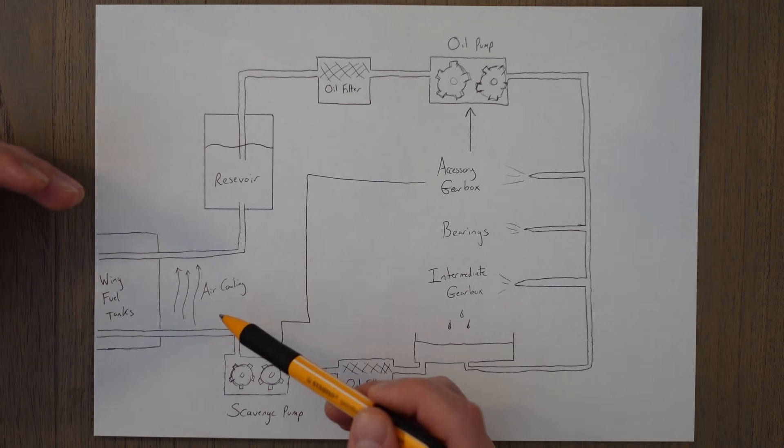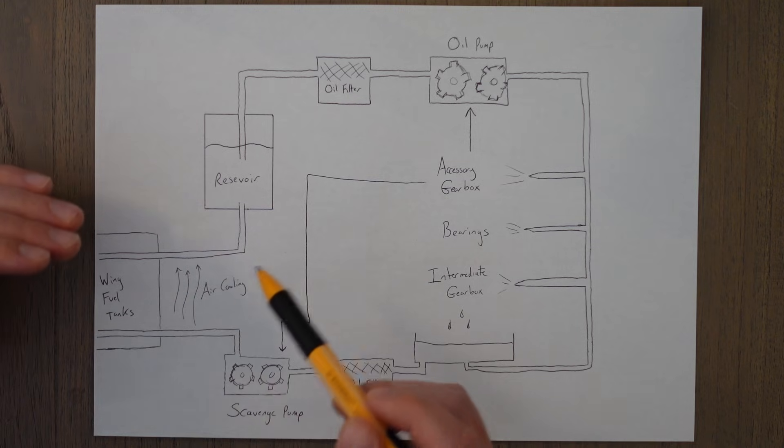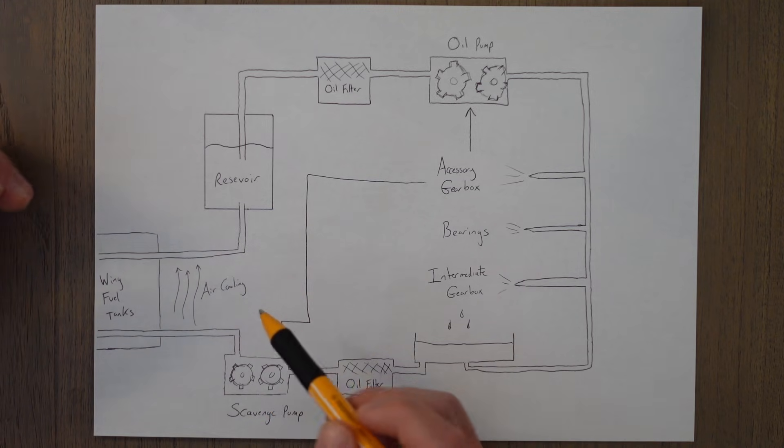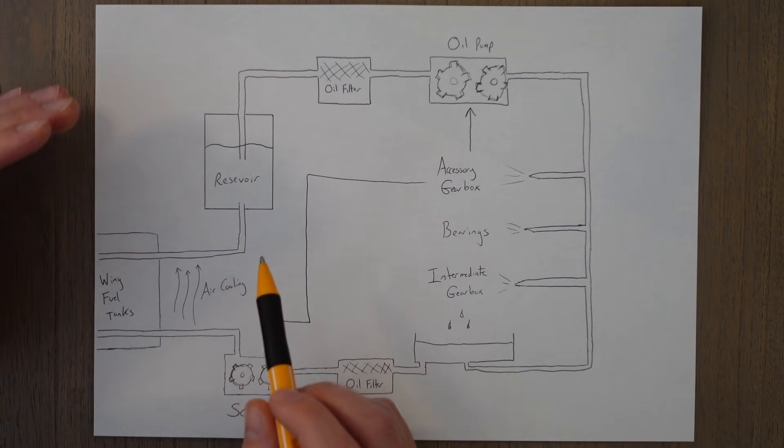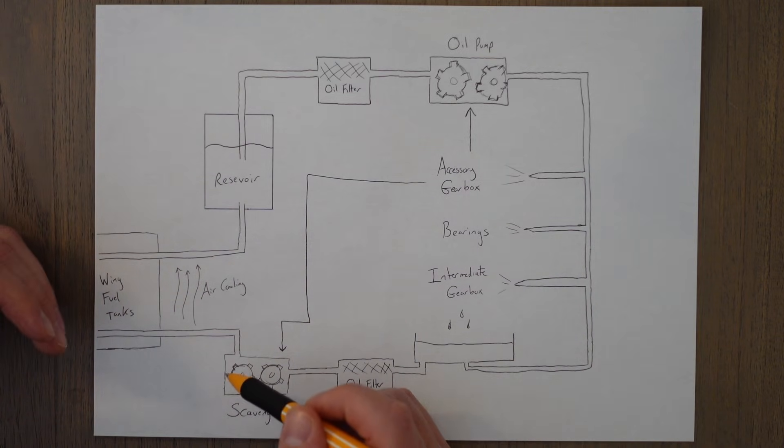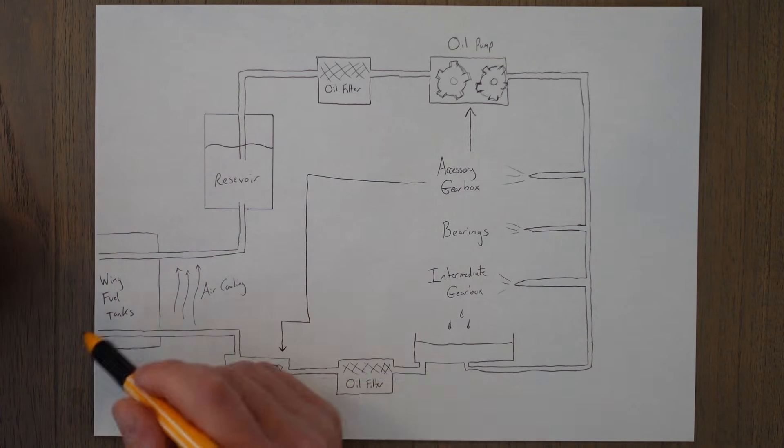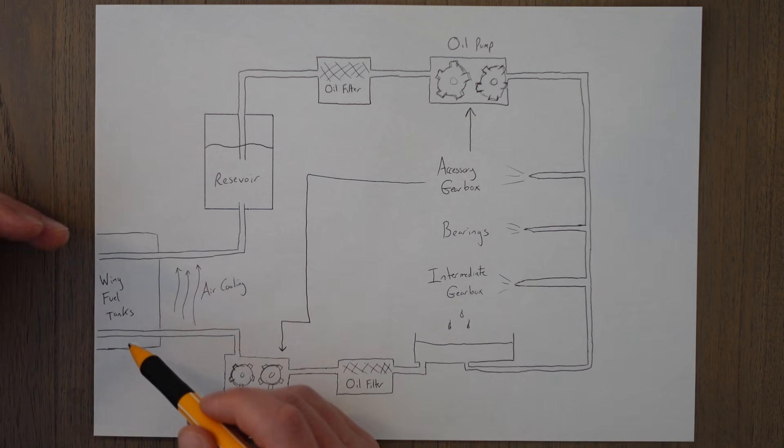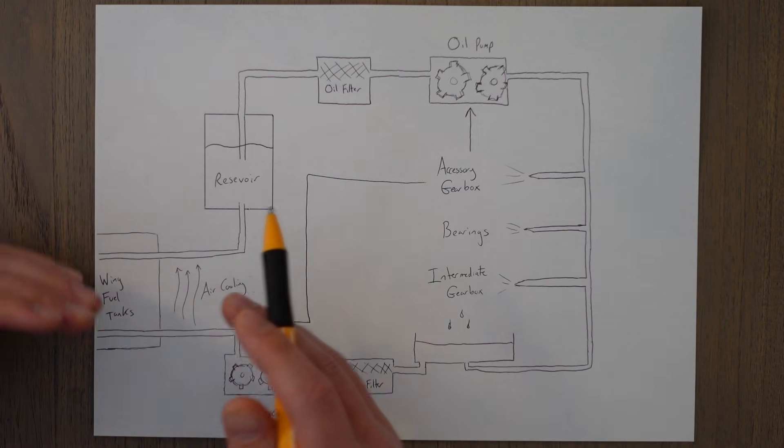Most aircraft these days will use a fuel-oil heat exchange. Essentially, the fuel from the wings isn't heated by anything, so it gets quite cold. And we have hot oil in the engine, so we pass the oil through lots of tubes located next to the cold fuel, and this cools down the oil and heats up the fuel—it exchanges the heat between the two.